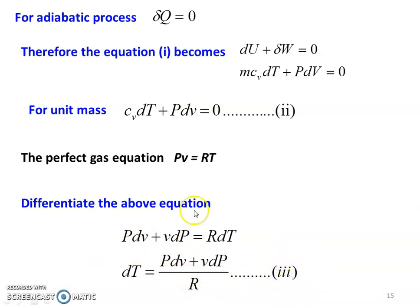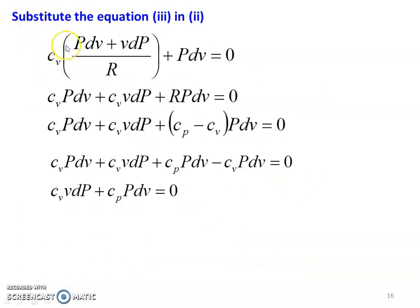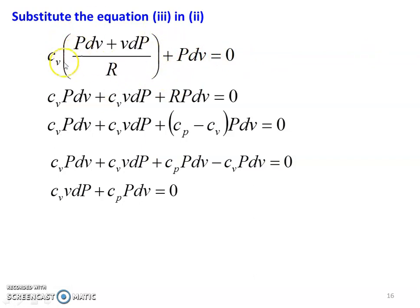Substituting equation 3 (the dT value) into equation 2: Cv into (p·dv plus v·dp) divided by R, plus p·dv equals zero. Taking R as the common denominator and cross-multiplying, since R times zero equals zero: Cv·p·dv plus Cv·v·dp plus R·p·dv equals zero.